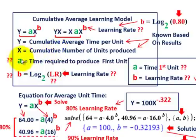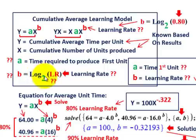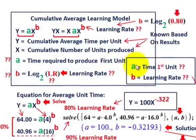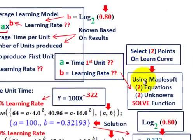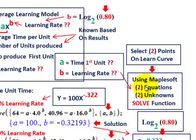We're going to have two unknowns to solve for: a, the time required to produce the first unit, and b, the learning rate — which is expressed as log base 2 of the learning rate percentage. We're going to use software, in this case Maplesoft, to solve two equations with two unknowns. Other packages like MATLAB would work as well. We select two points on our learning curve and input them into the software's solve function.